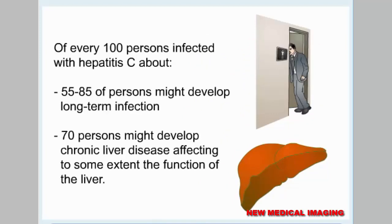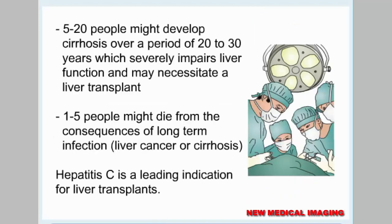Of every 100 persons infected with hepatitis C, about 55 to 85 might develop long-term infection. 70 persons might develop chronic liver disease. 5 to 20 people might develop cirrhosis over a period of 20 to 30 years, which severely impairs liver function and may necessitate a liver transplant. 1 to 5 people might die from the consequences of long-term infection, liver cancer, or cirrhosis. Hepatitis C is a leading indication for liver transplants.